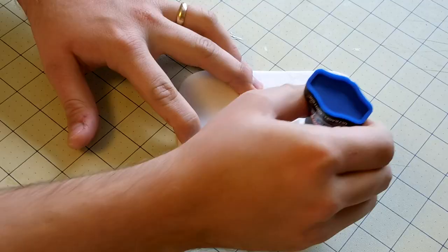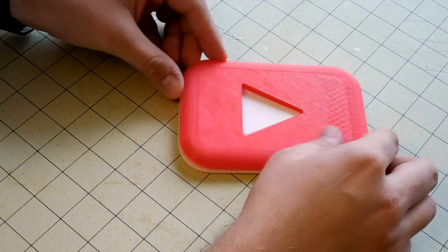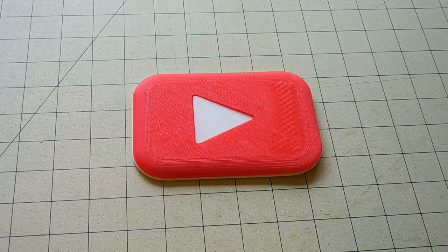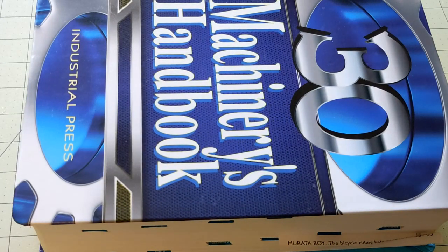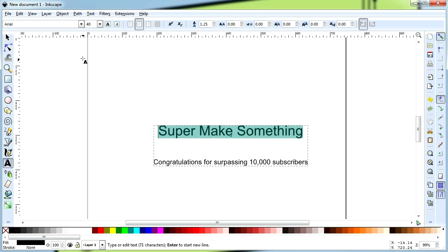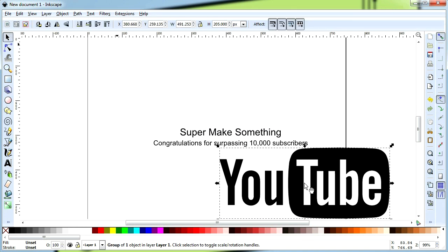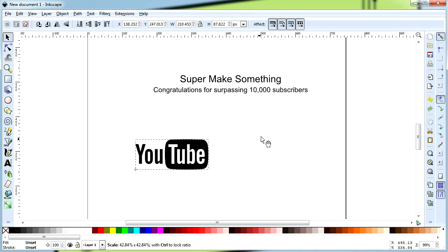Once the two plates were finished printing, I applied superglue to both pieces and pressed them together. I then sandwiched the assembly between a tabletop and a book to remove some of the curling and straighten out the play button. While the glue dried, I opened up Inkscape, a free vector editing program on my computer. Here, I replicated the graphics and text found on the official YouTube Creator Rewards.